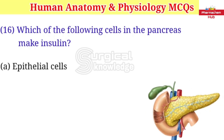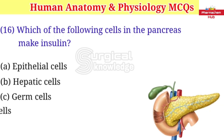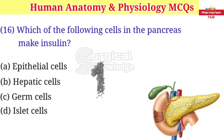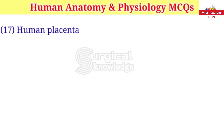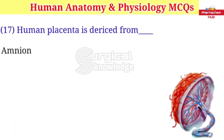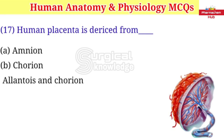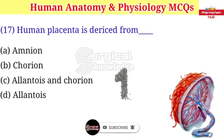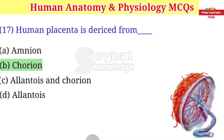Which of the following cells in the pancreas make insulin? A. Epithelial cells B. Hepatic cells C. Germ cells D. Islet cells. Right answer is islet cells. Human placenta is derived from: A. Amnion B. Chorion C. Allantois D. Allantois. Right answer is chorion.